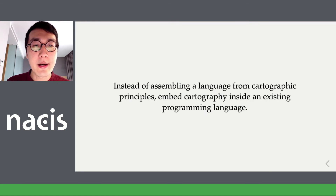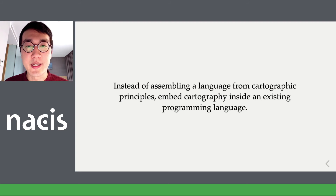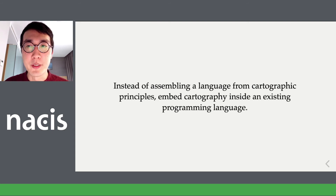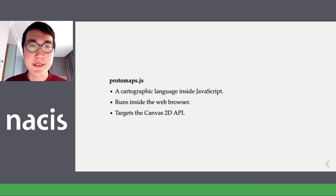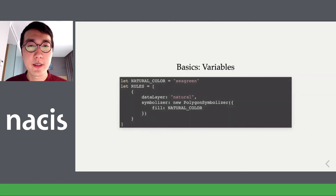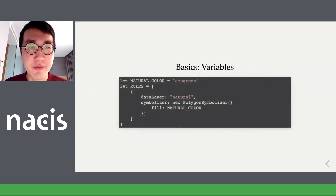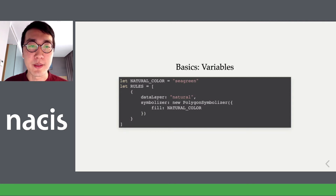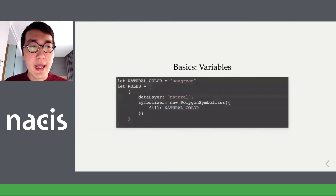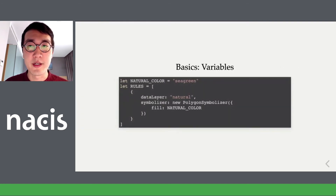In the past year I've been exploring the idea of, instead of assembling a language from cartographic principles bottom-up, building these principles inside an existing language. The system I'm working on is called Protomaps.js — a cartographic language inside of JavaScript that runs in the web browser and is based on the Canvas 2D graphics API. As a basic example, I might have a polygon symbolizer where I have a fill variable and at the top I define a color variable and just refer to it directly — it's plain old JavaScript.